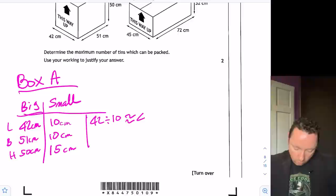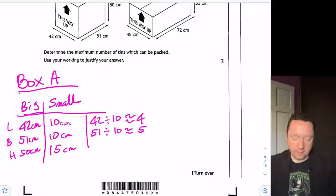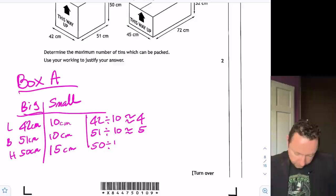And then 51 divided by 10, that's about 5. And then 15 into 50. 15, 30, 45. It's going to be 3 in a bit. So 50 divided by 15 approximately is 3. So in total, remember we just times our answers together. 4 times 5 times 3. 20 times 3 is 60. So I can get 60 in box A. Now I need to do box B.